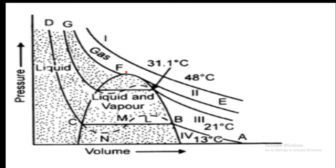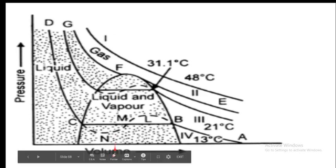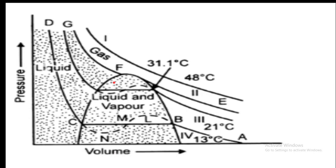Carbon dioxide exists in a state called the critical state at point F. The volume occupied by carbon dioxide at this critical point F is called the critical volume, and it is approximately equal to 95 cm³.